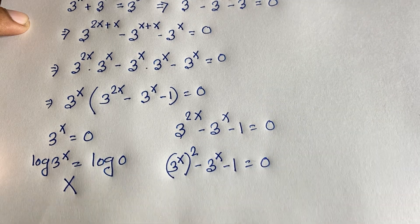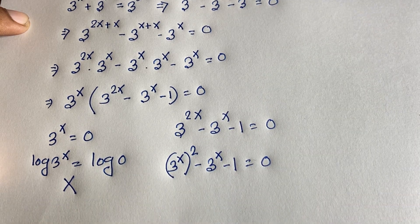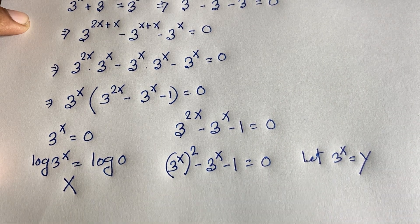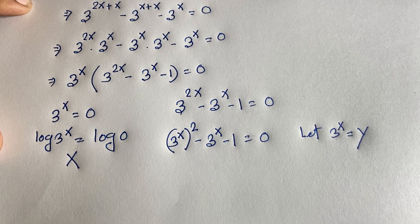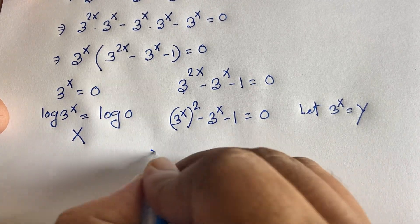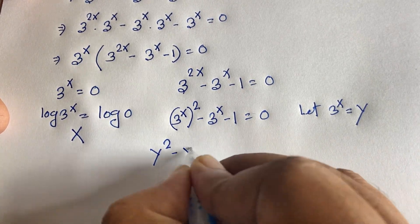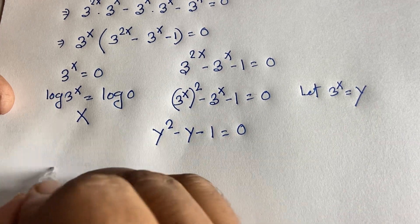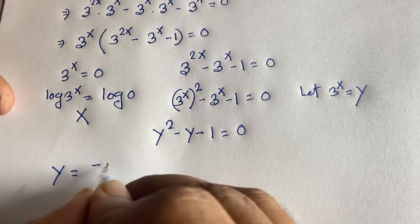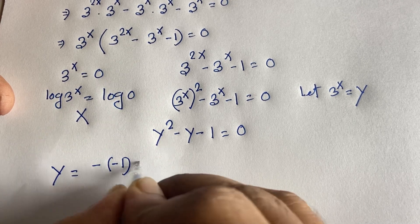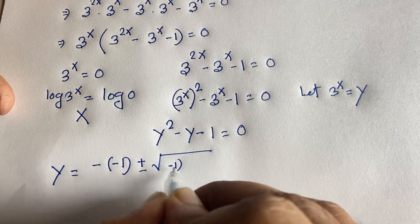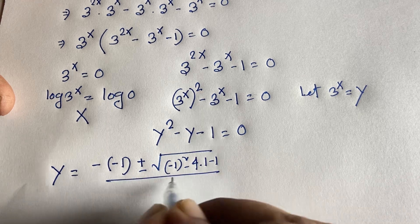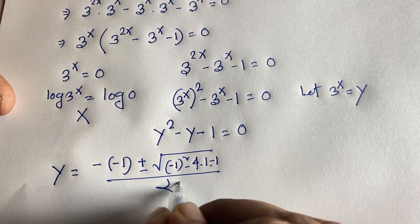Now let y equal 3 to the power x. Substituting into the equation gives us: y squared minus y minus 1 equals 0. Applying the quadratic formula, y equals negative b plus or minus square root of (b squared minus 4ac) over 2a, where a equals 1, b equals negative 1, c equals negative 1.